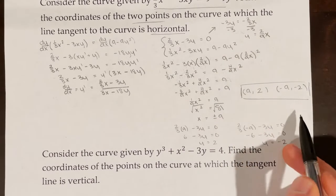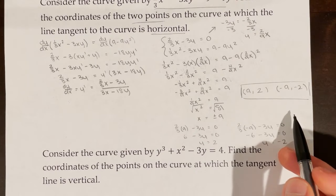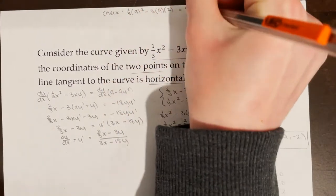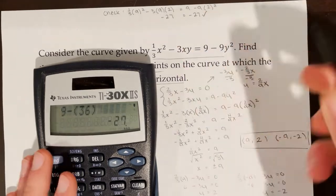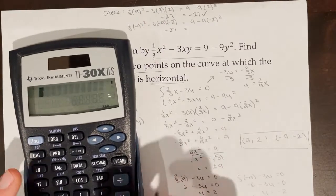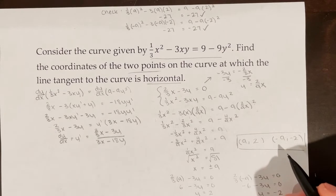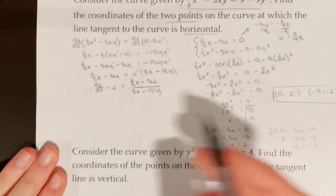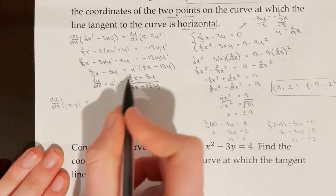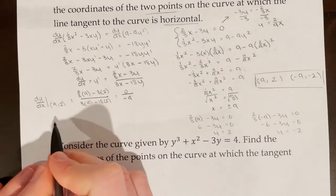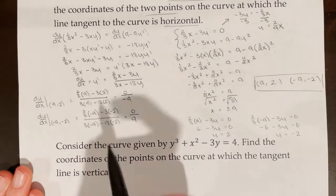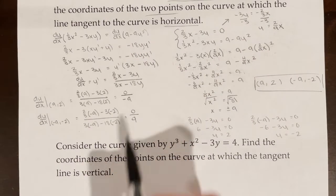I need to check both points: that they lie on the curve and that both produce horizontal tangent lines. After checking both points lie on the curve, I evaluate dy/dx at (9, 2) and at (-9, -2). Both produce a numerator of 0, confirming horizontal tangent lines at both points.